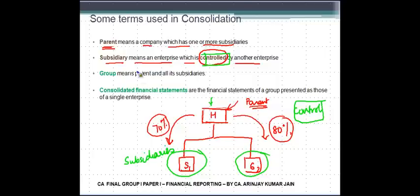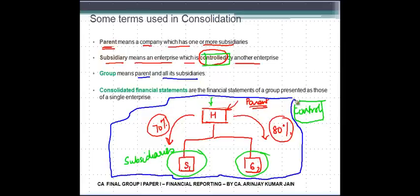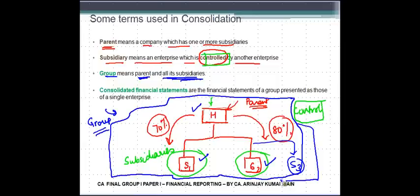Group means parent and all its subsidiaries. If I draw a larger box here, this entire blue box represents the group. Why? Because this comprises of H which is the holding company and the two subsidiaries. If there are other subsidiaries as well, S3, S4 and everything, then this blue line will expand accordingly.